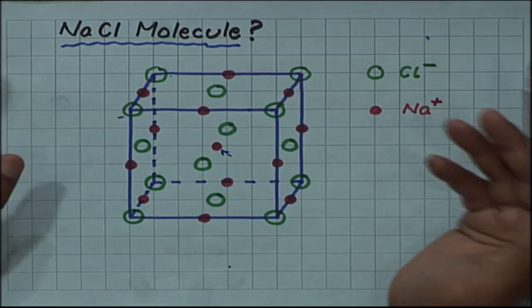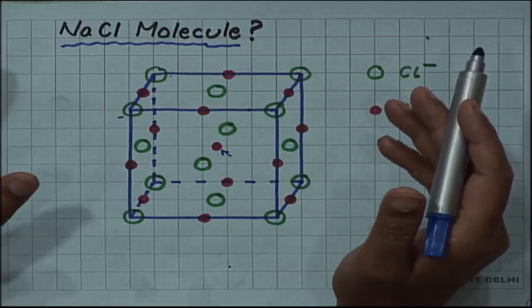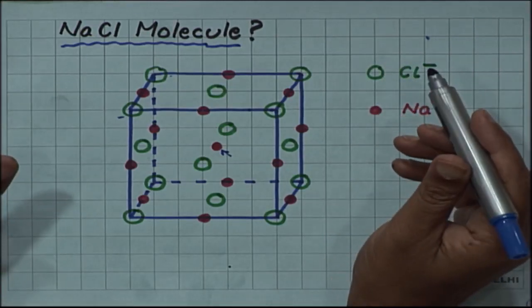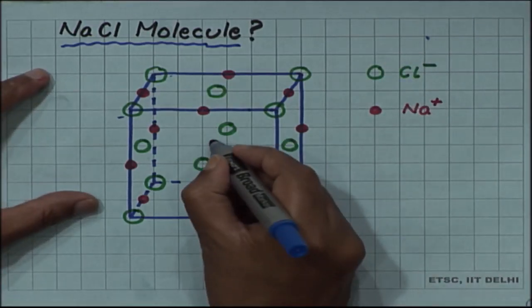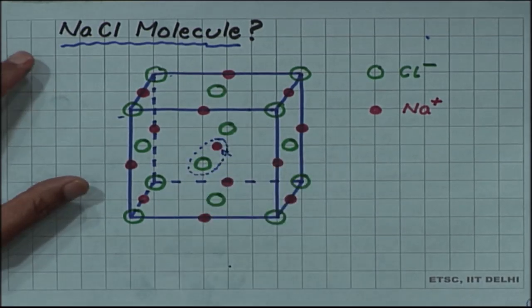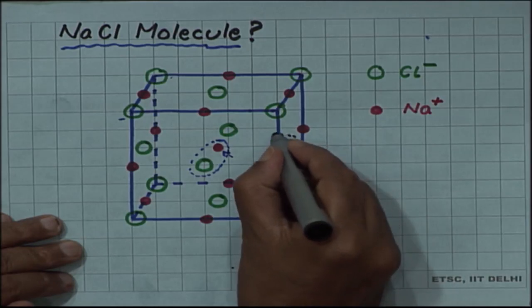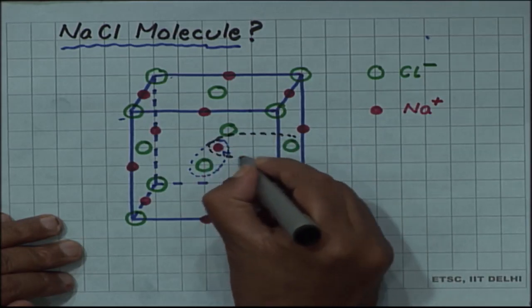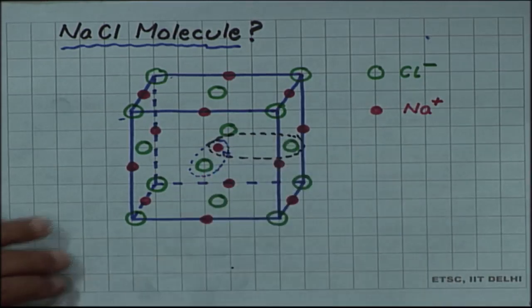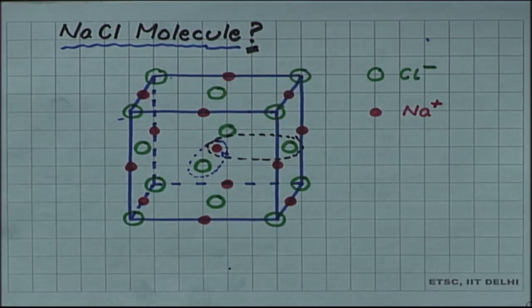Where is the sodium chloride molecule in this structure? That is the question. Is this sodium paired with this chlorine forming a sodium chloride molecule, or is it paired with another chlorine? This was an important question which was raised once the structure was solved.